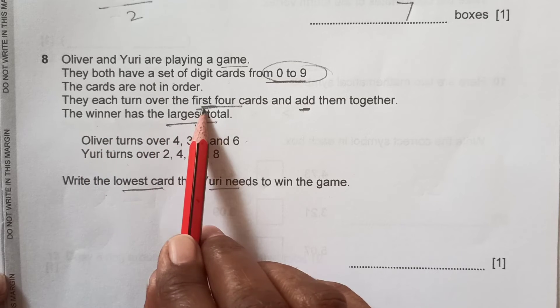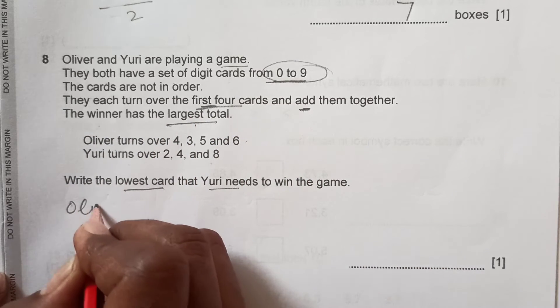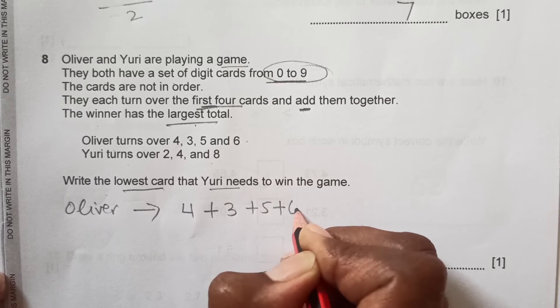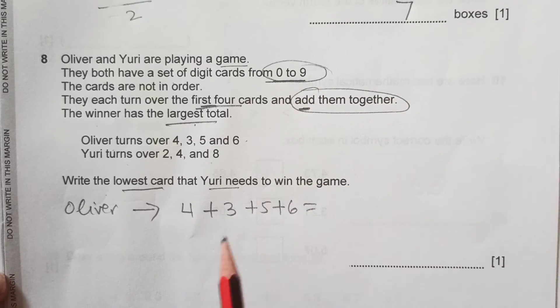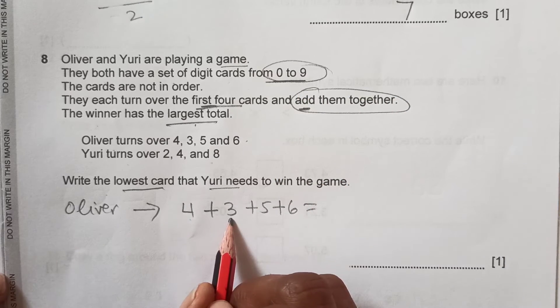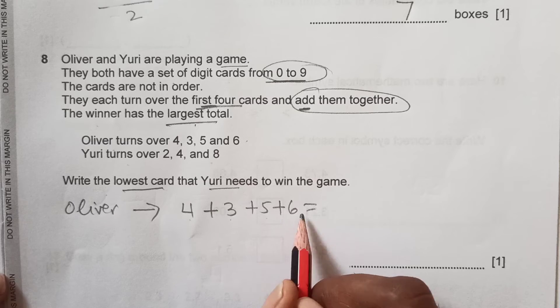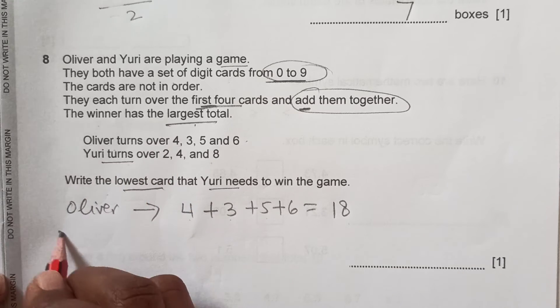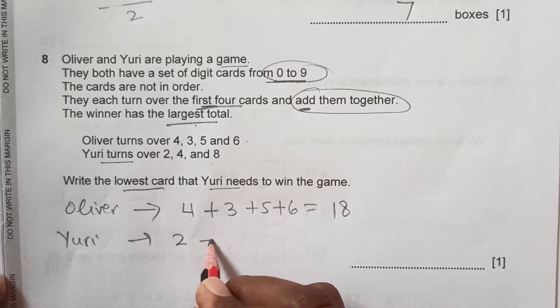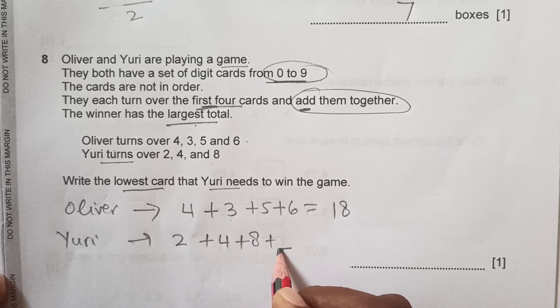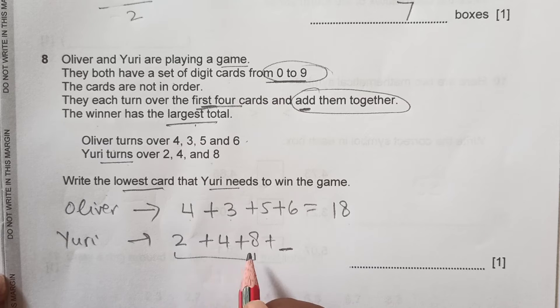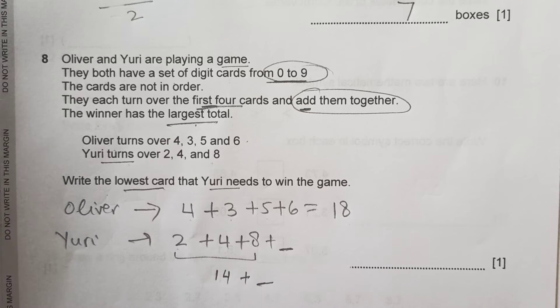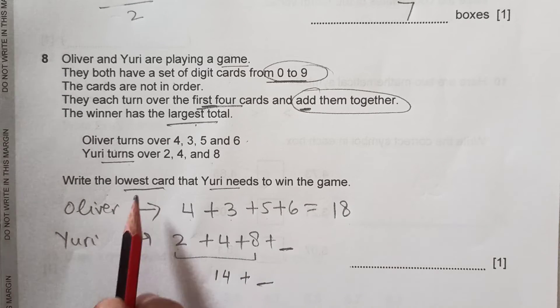The cards are from 0 to 9. They each turn over four cards and add them together. Oliver's cards are 4, 3, 5, and 6. Let's add them: 4 plus 3 is 7, plus 5 is 12, plus 6 is 18. So Oliver got a total of 18. Yuri turns over: Yuri is having 2 plus 4 plus 8, and one card is missing. The total of this is 4 plus 2 is 6, it is 14 plus something.